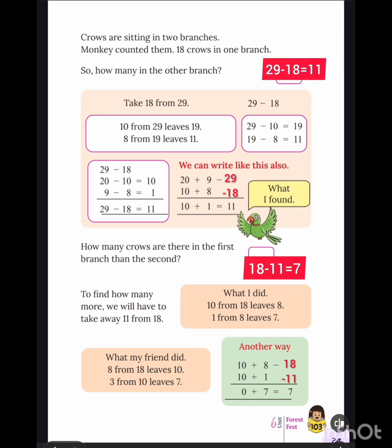Page number 103. Crows are sitting in two branches. The monkey counted them — 18 crows in one branch. How many in the other branch? 29 minus 18 is equal to 11. How many crows are there in the first branch than the second? 18 minus 11 is equal to 7.